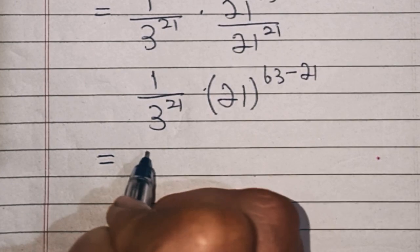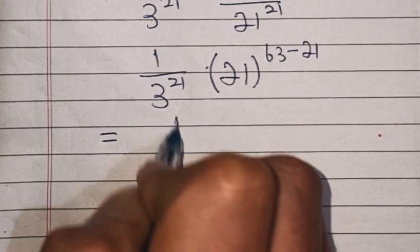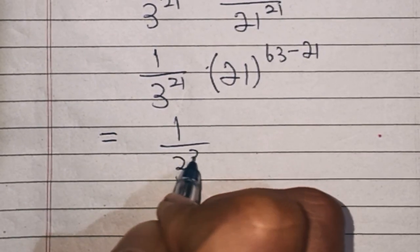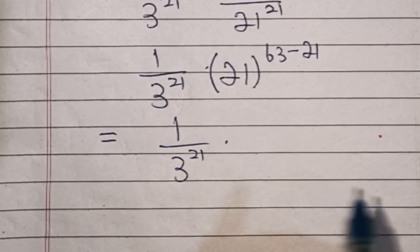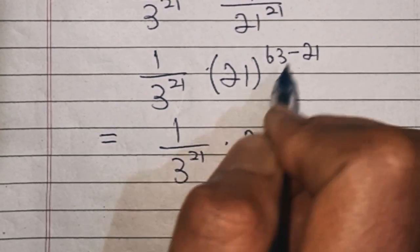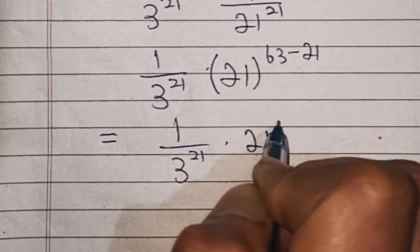which is equal to 1 over 3 power 21 into 21 power, 63 minus 21 is 42.